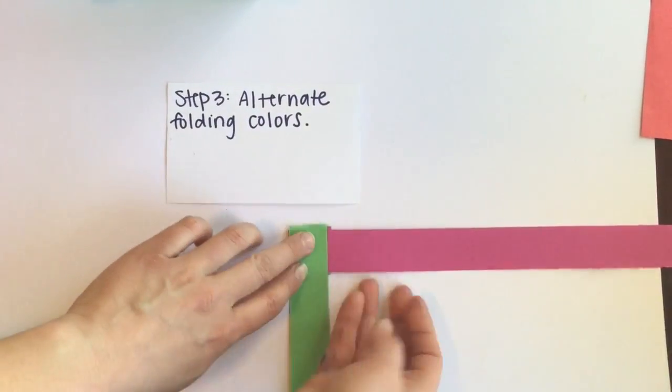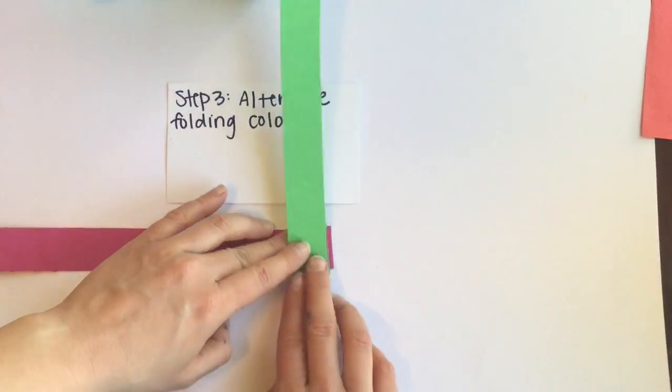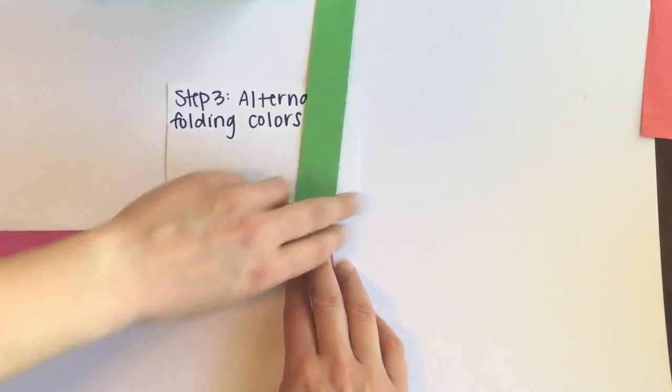Then I fold magenta over and I'm basically creating a square right here, keeping a square here every time and holding it to the table. Fold my green, fold my magenta and I'm going to keep going all the while holding it to the table.